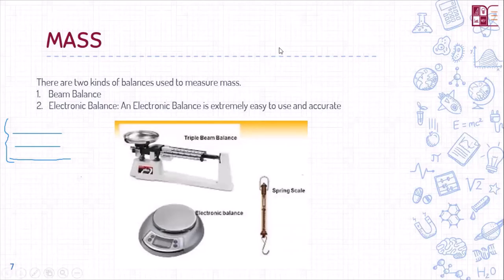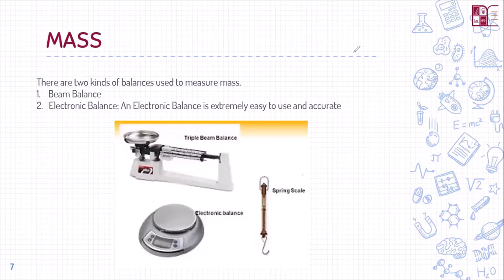Masses can be measured using balances. There are two types: a beam balance and an electronic balance. The triple beam balance, the electronic balance, and the spring scale are shown in the image. The spring scale is usually used for smaller objects as it cannot measure heavier ones. The beam balance has a pan on one end and a slider on the other.